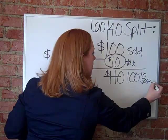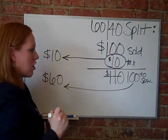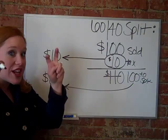Now it's very simple. I just take 60%, or $60, and move it over here. So this is $60 — that is 60% of the total amount that I collected after I removed the sales tax.